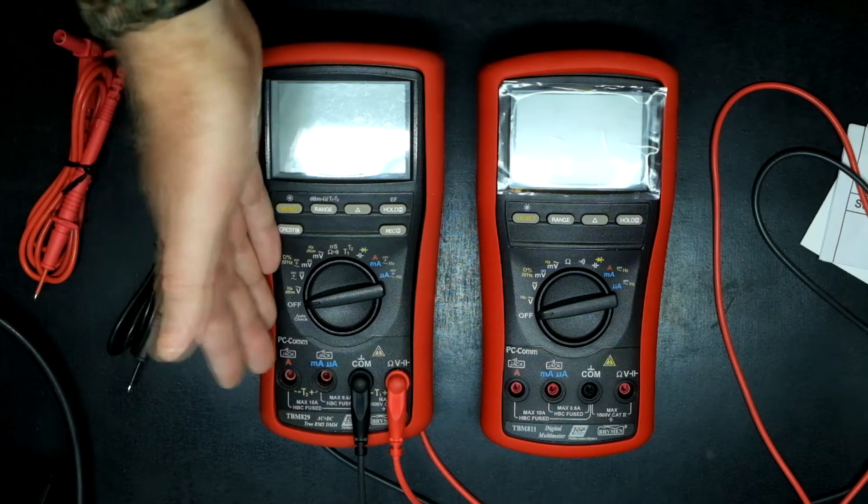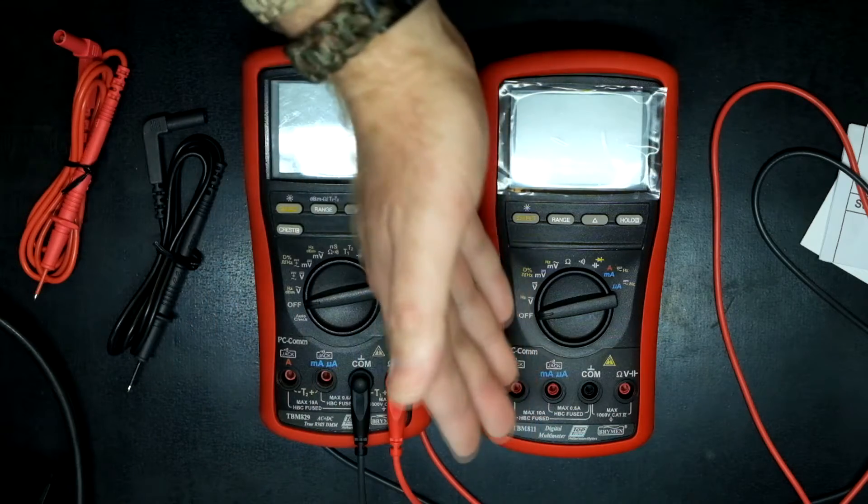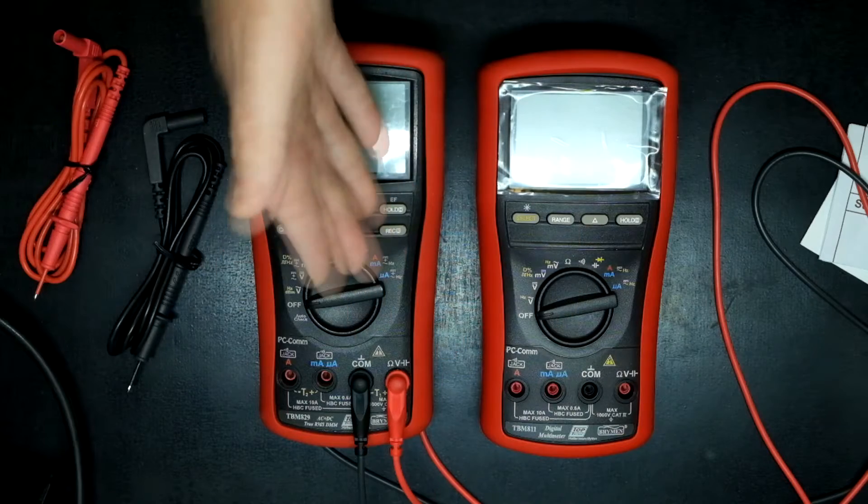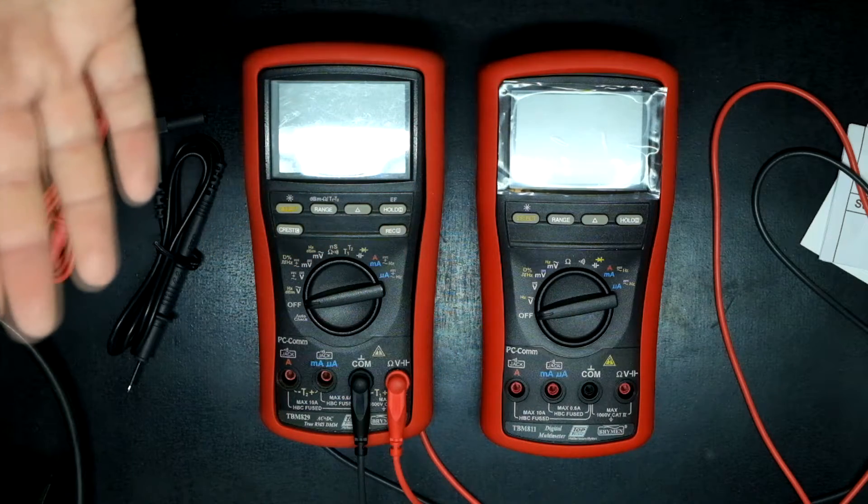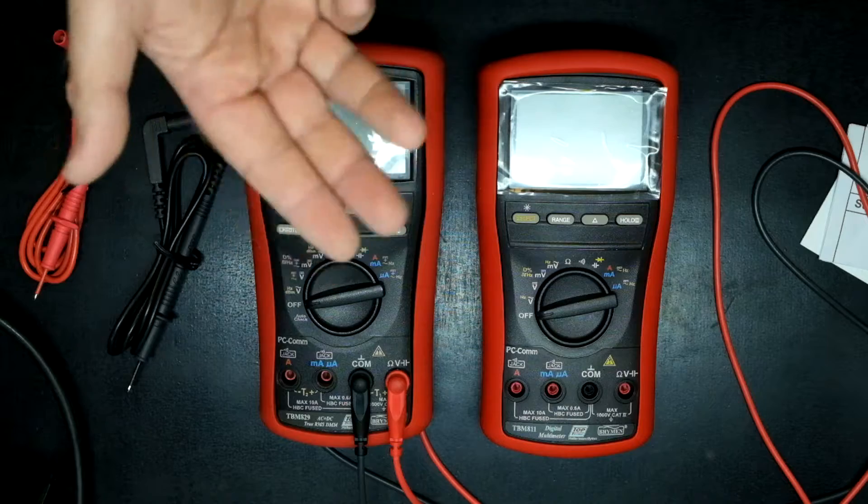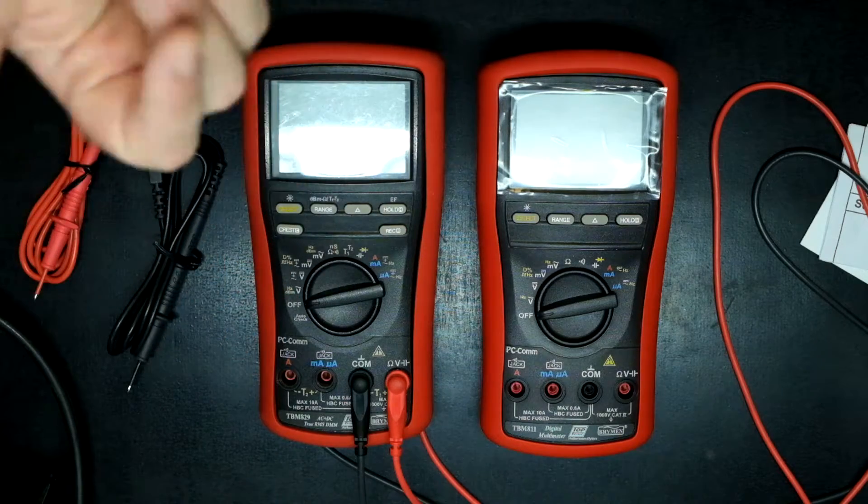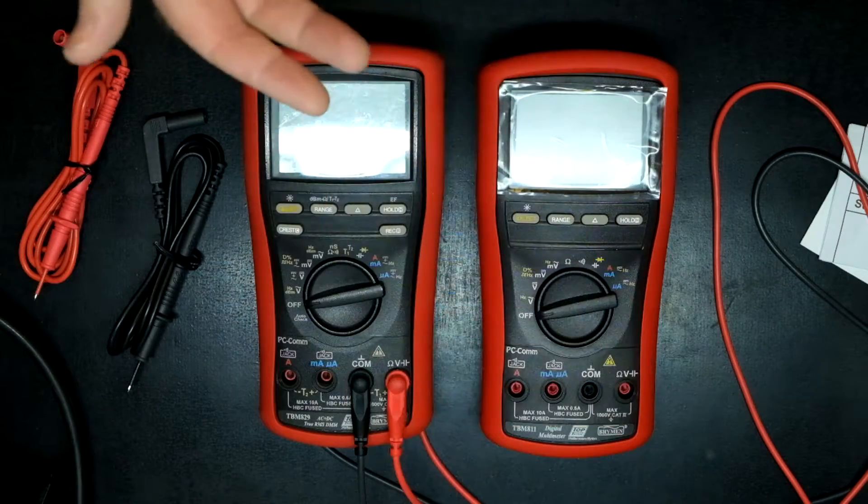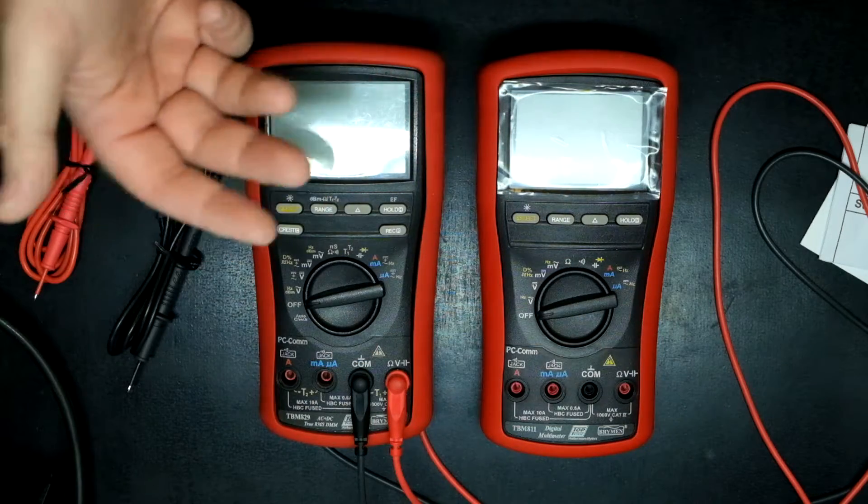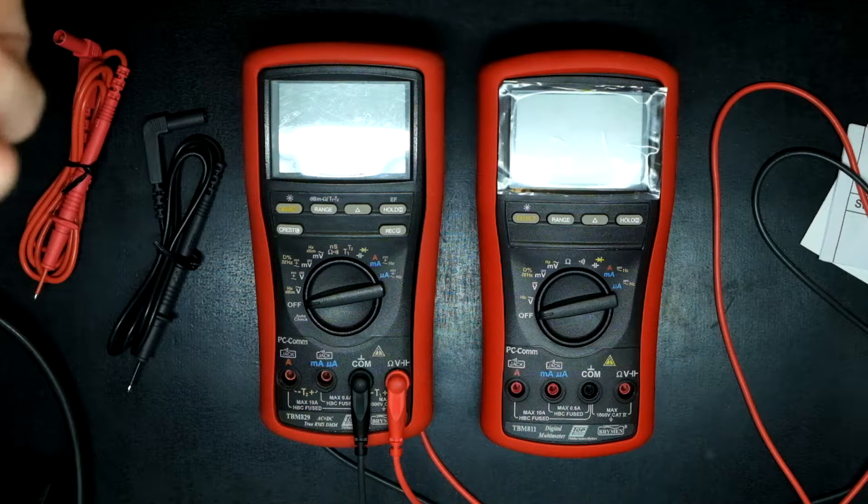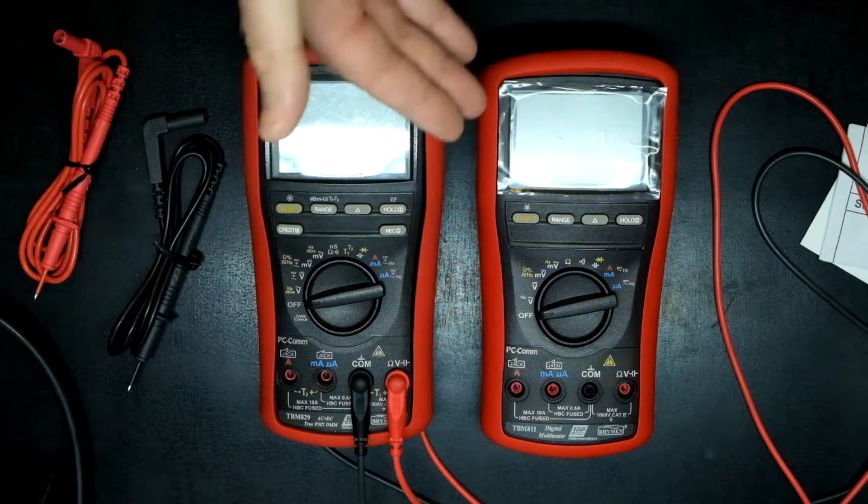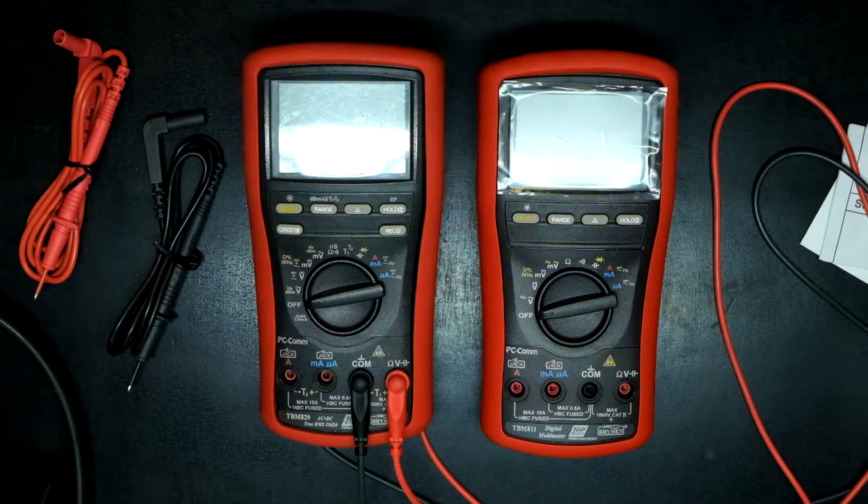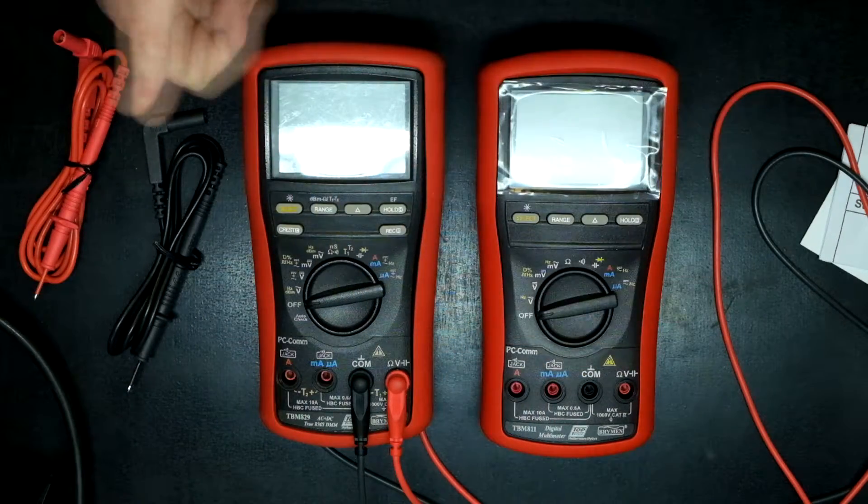This is a true RMS multimeter whereas the 811 is not. Whether that makes a big difference in your life, well that's for you to decide. When it comes to AC measurements, the true RMS is very handy, especially when working with things like inverters where non-true RMS multimeters can be confused and give you incorrect readings. But all that said, they're all fantastic meters.